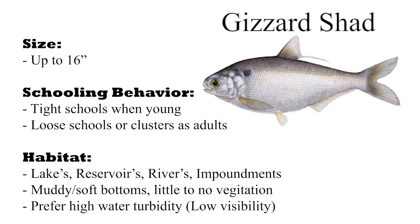Gizzard shad, though commonly 6 to 10 inches in length, can grow up to 16 inches. When young, gizzard shad like to be in tight schools, which helps protect them. As gizzard shad grow into adulthood, the schools will start to loosen and they'll form small clusters. Gizzard shad are found in lakes, reservoirs, rivers, and impoundments — some naturally and some introduced artificially as a forage fish for predator species. Gizzard shad prefer muddy soft bottoms with little to no vegetation, and they also prefer the water to be a bit turbid, meaning low visibility.